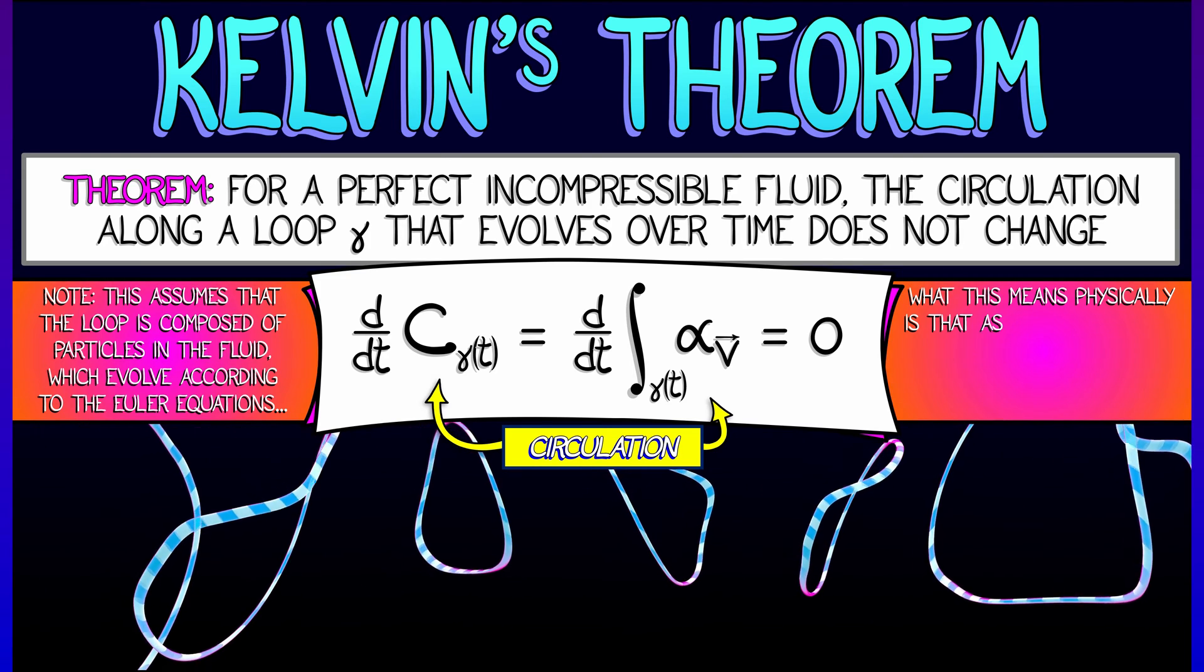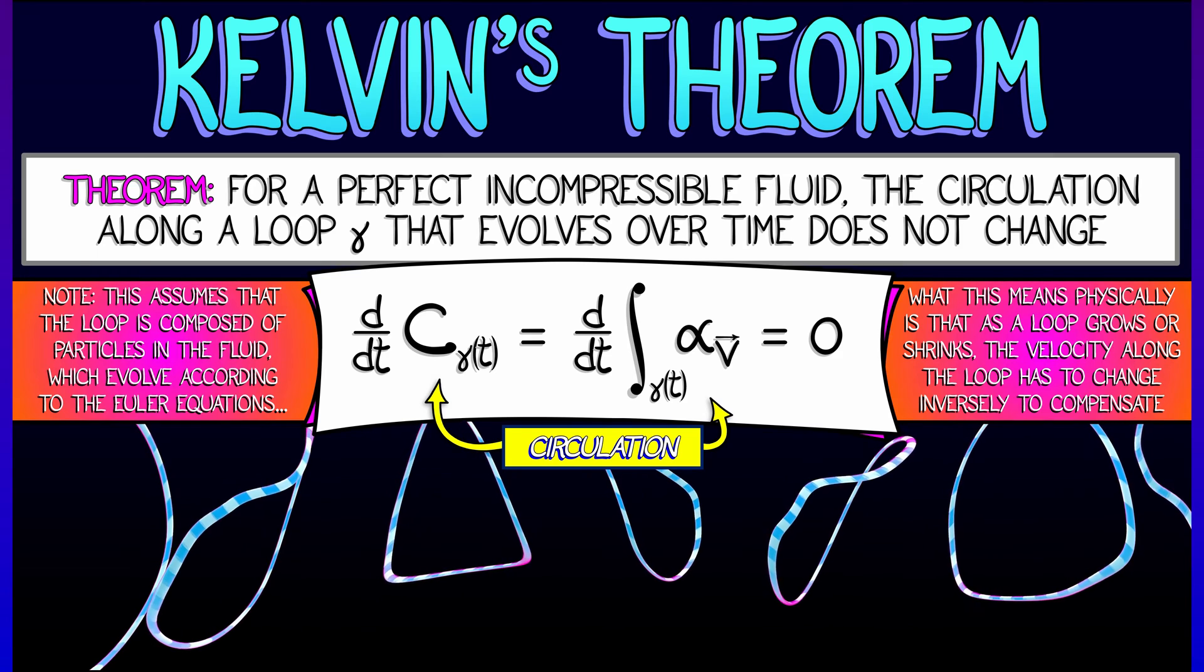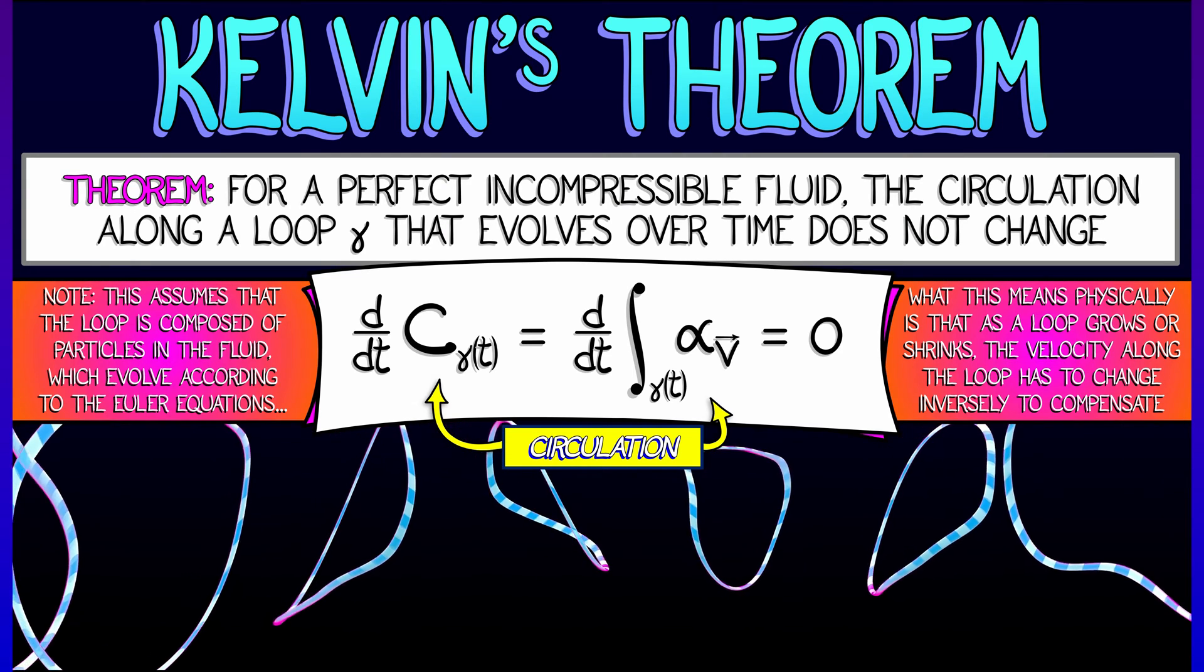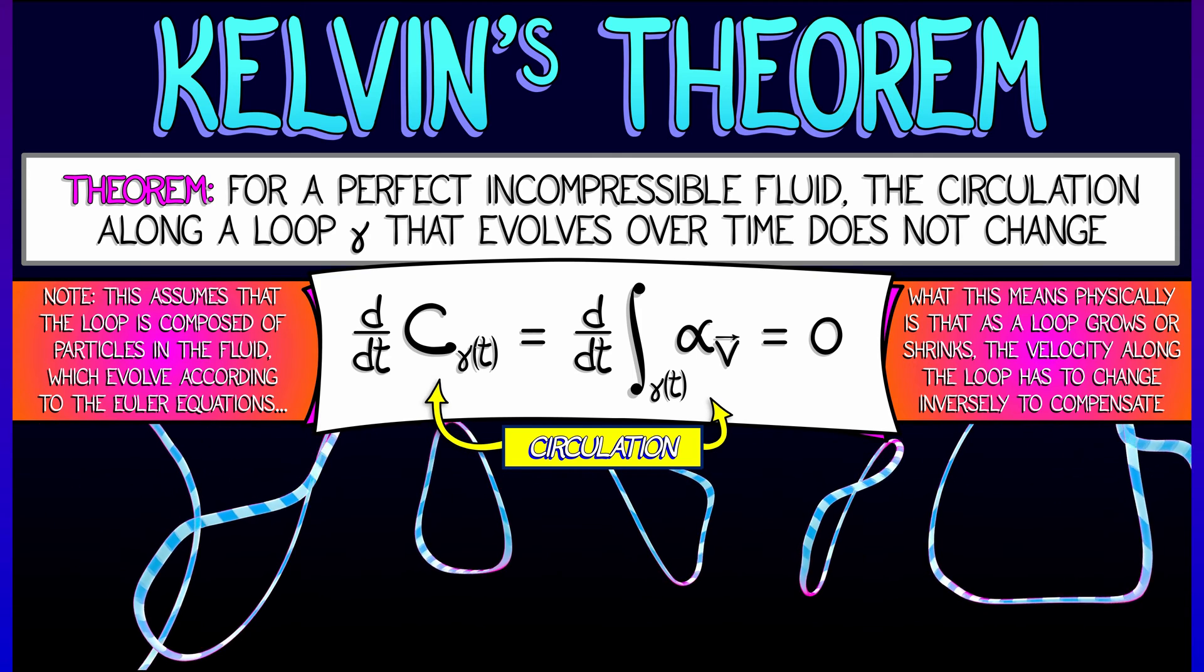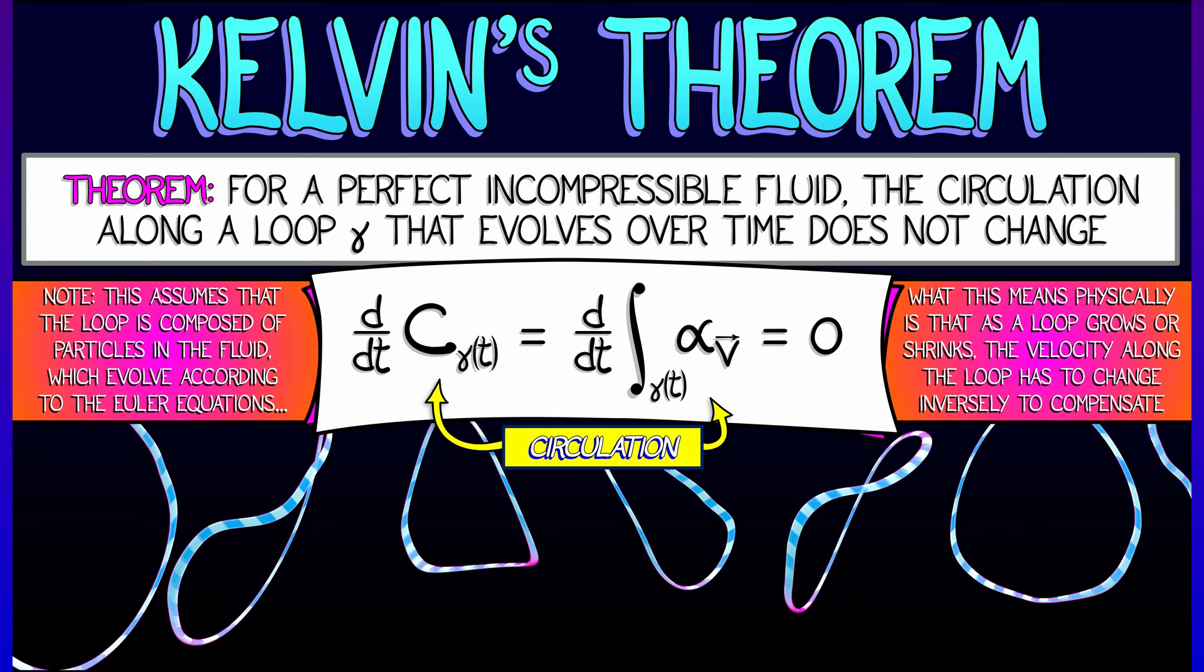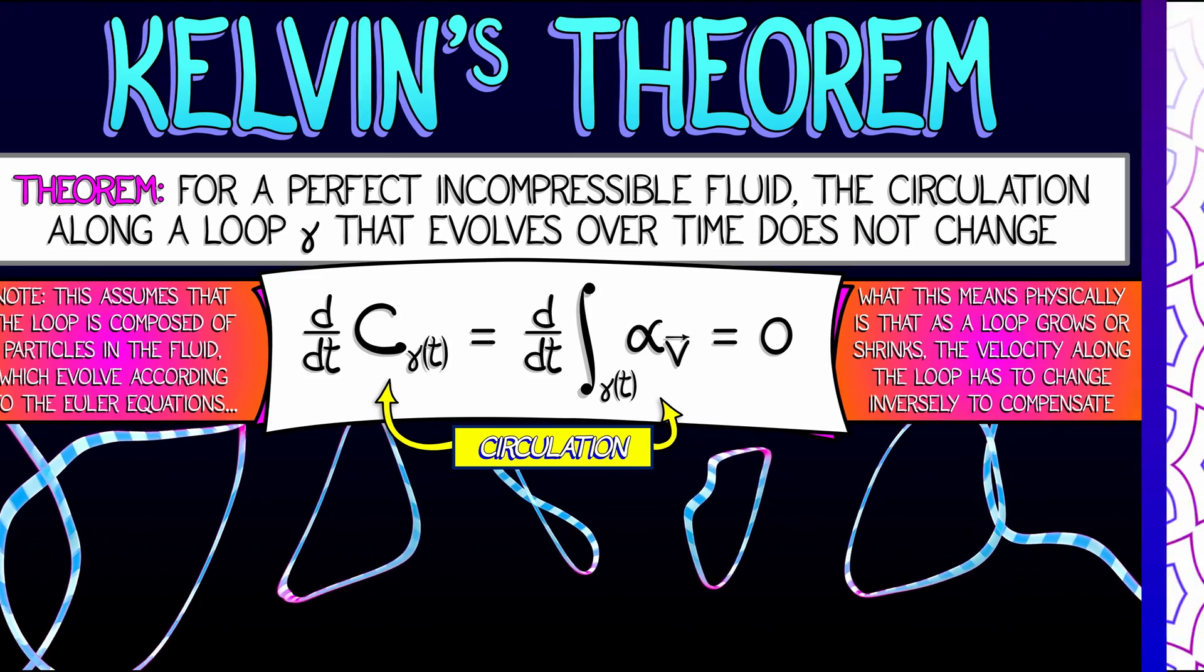And what this means physically is that as this loop of fluid is shrinking or stretching or evolving, the velocity field along that loop is changing in order to compensate, in order to make the net spin about that loop constant and unchanging.